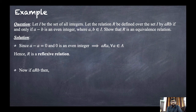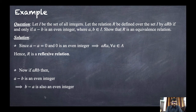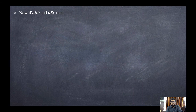If a is related to b, then by definition a minus b is an even integer. Since a minus b is even, it follows that b minus a is also an even integer. Therefore b is related to a. Hence R is a symmetric relation.